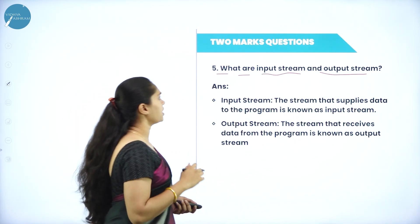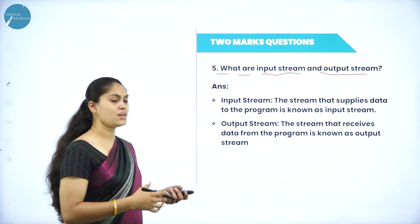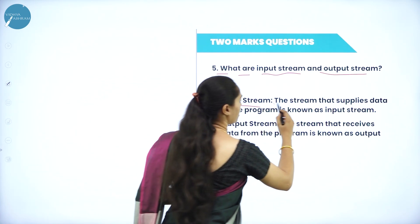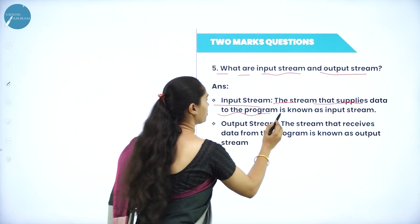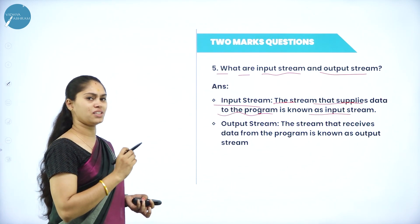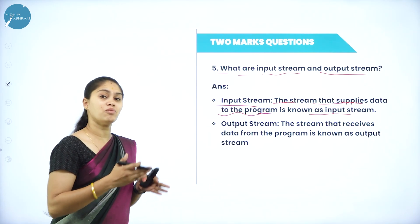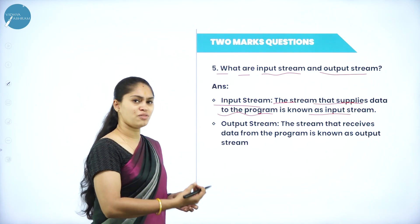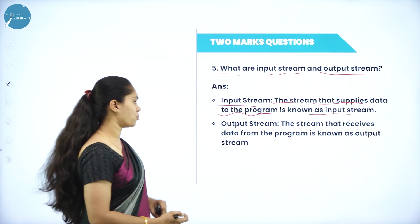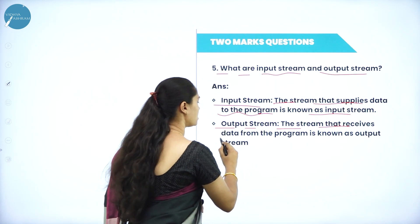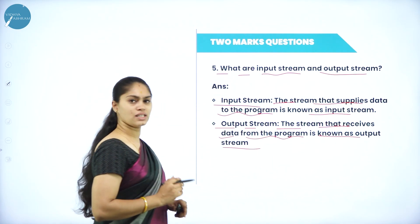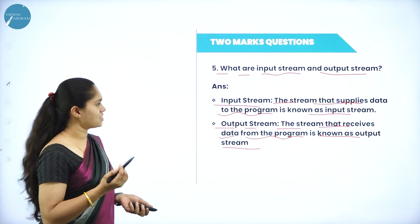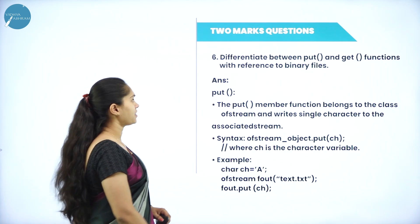The next question asks for the definitions of input stream and output stream. The stream that supplies data to the program is called the input stream. The stream that receives data from the program is called the output stream.